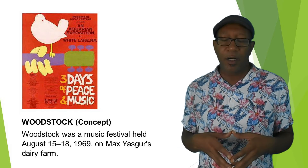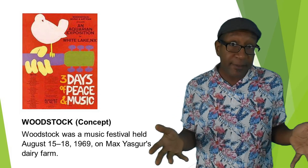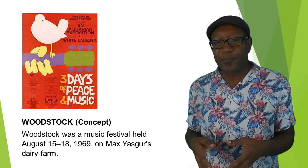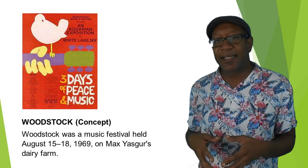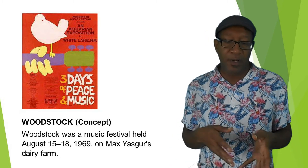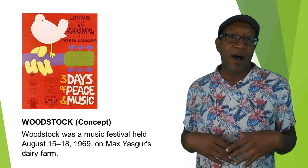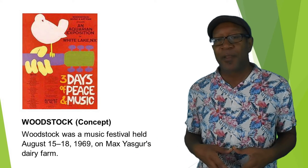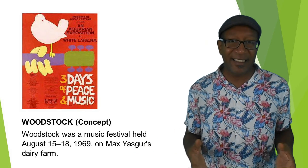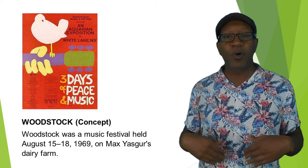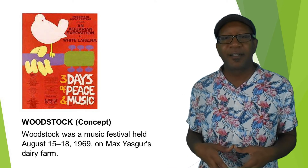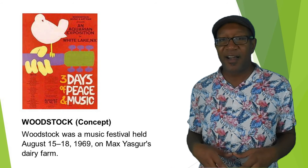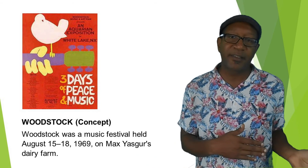Woodstock was a festival held from August 15 to 18, 1969, at Max Yasgur's Dairy Farm — a farm that was converted into a festival site. Woodstock is considered the highlight of the hippie movement. They tried to recreate it later, but the magic was gone and it never happened again the same way it did in the 60s.